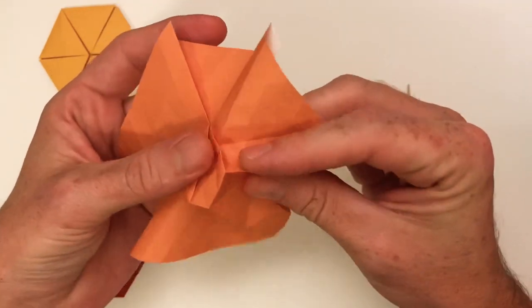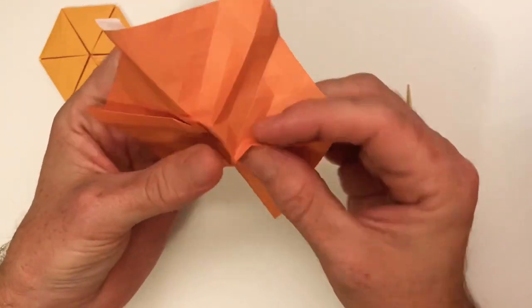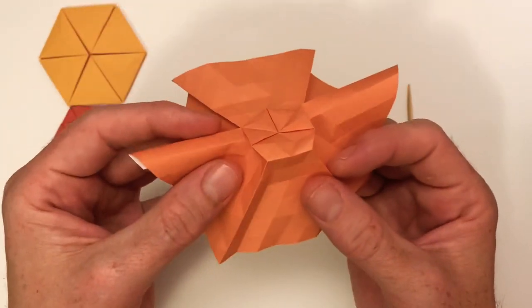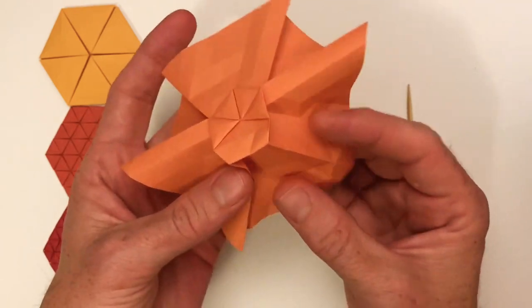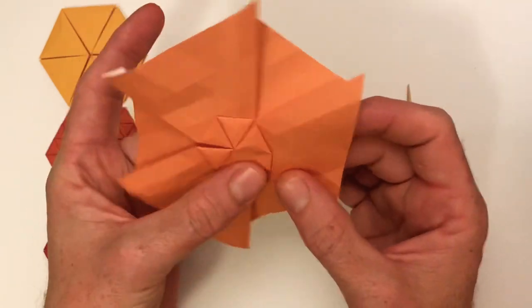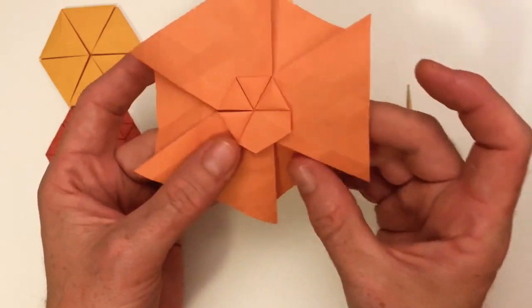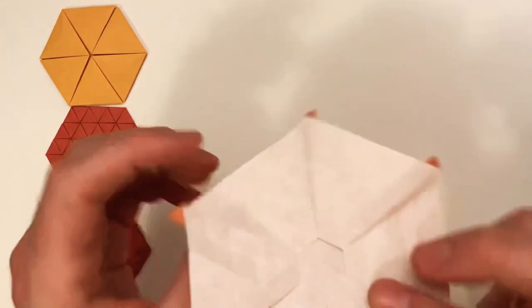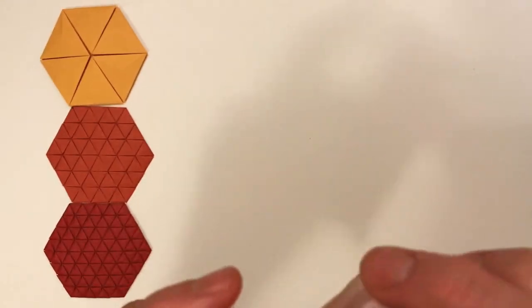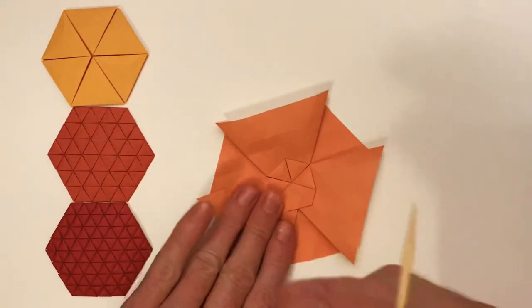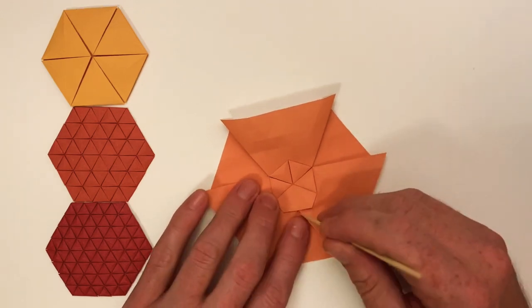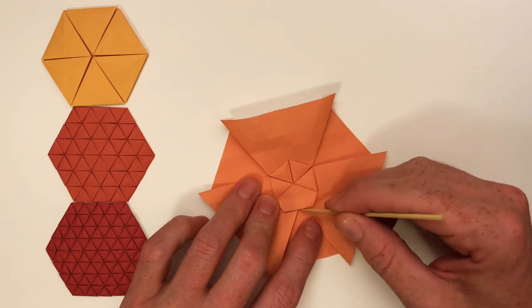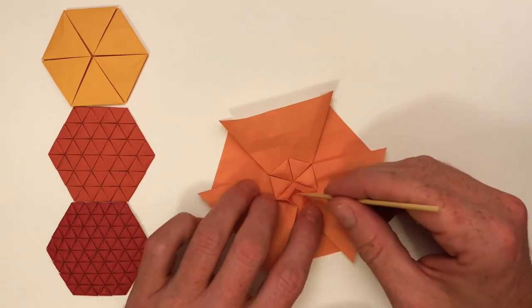But like everything, it does take a fair bit of practice. So this last one, you're doing two at the same time. Flattens down like this. Use my handy wooden skewer. And you want to open it up along that crease there. Just like that.